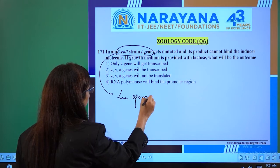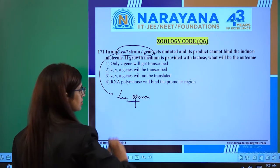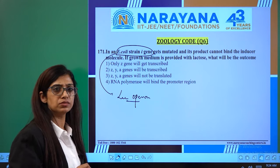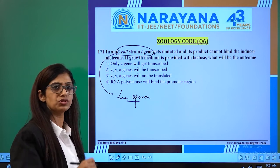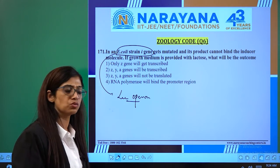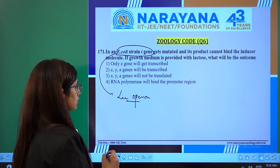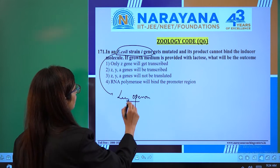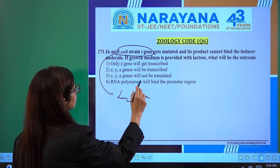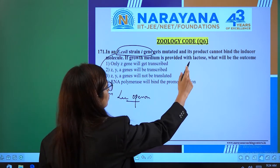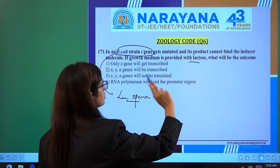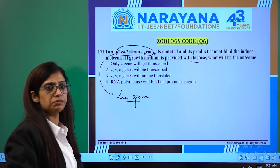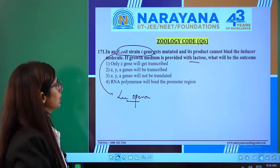Lac operon is a system made for lactose metabolism, where lactose is present and glucose is absent. This is written in NCERT. So lac operon works only when we provide lactose, and the metabolism of lactose will start.